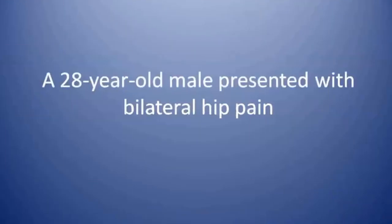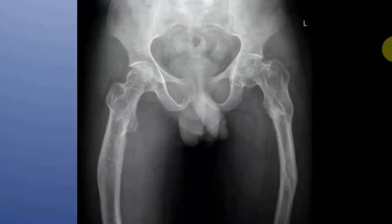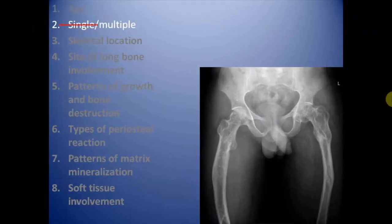This is the case of a 28-year-old male who presented with bilateral hip pain. This is the AP radiograph of the pelvis including the bilateral hip joints and bilateral femur. We are going to evaluate the lesions on the basis of the following criteria. First is age of the patient — 28 years.